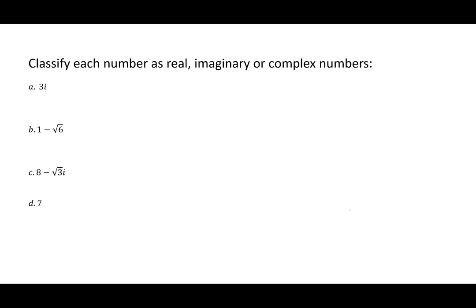Let's look at classifying numbers as real, imaginary, or complex. All imaginary numbers are complex numbers, but if asked to pick one, here's how: 3i we call imaginary. The number 1 minus the square root of 6 has no i's, so it's a real number. The expression 8 minus the square root of 3i has an i, making it complex. The number 7 is again real. Look for i's — complex numbers have two pieces (real and imaginary), whereas purely imaginary numbers have just one.